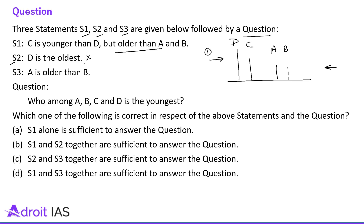Now let's talk about statement number 3, S3: A is older than B. This means B is the youngest. So the hierarchy level is B, A, C, D.